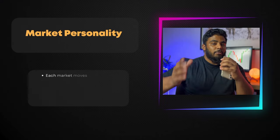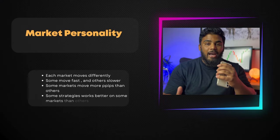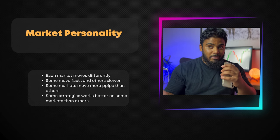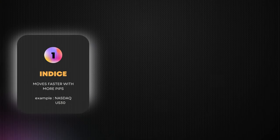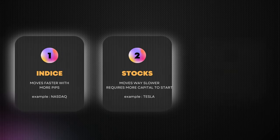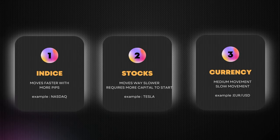First up is choosing the market you want to trade. There are so many markets and choosing one is such an important part because it really needs to fit your personality. There's Nasdaq which is an index, stocks like Tesla, and currencies like EUR/USD. A currency moves much more slowly whereas an index moves more pips in value. Let me know in the comments what market is best for you.